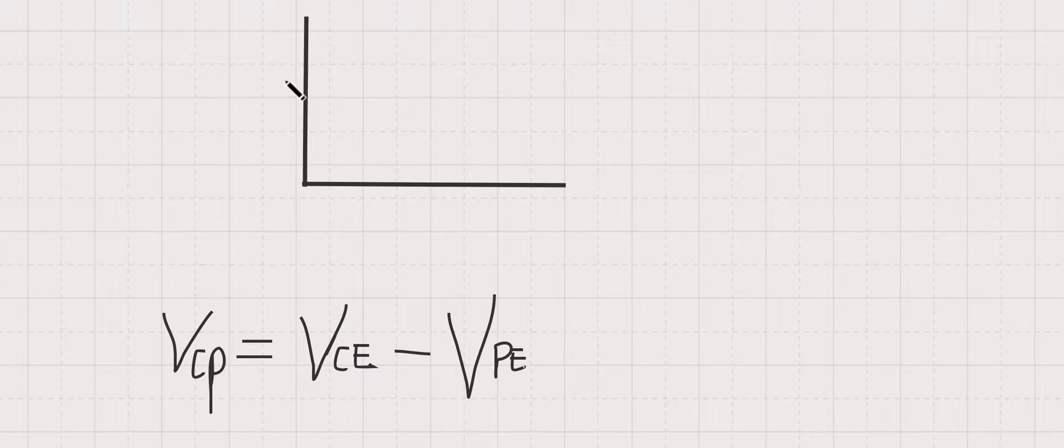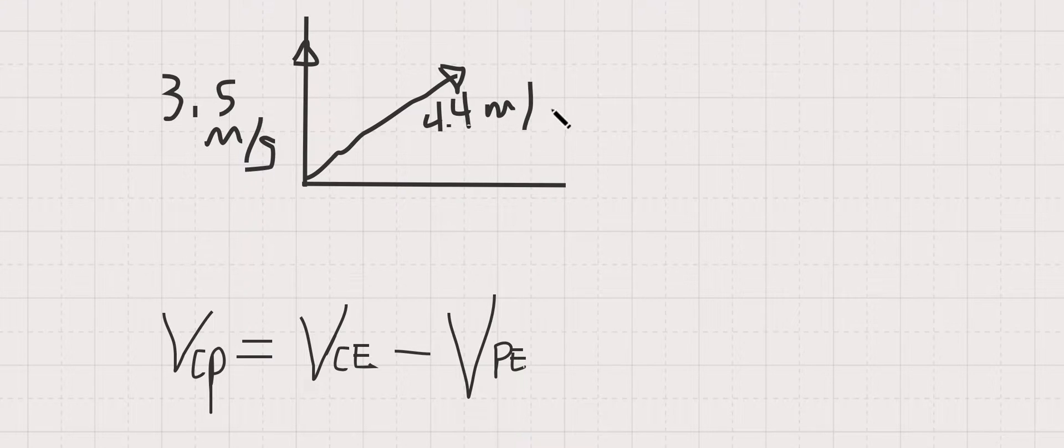So the cruise ship is heading north with the velocity of 3.5 meters per second. The patrol boat is heading north of east at 4.4 meters per second. The angle here north of east, which means from the x-axis, is 29 degrees.